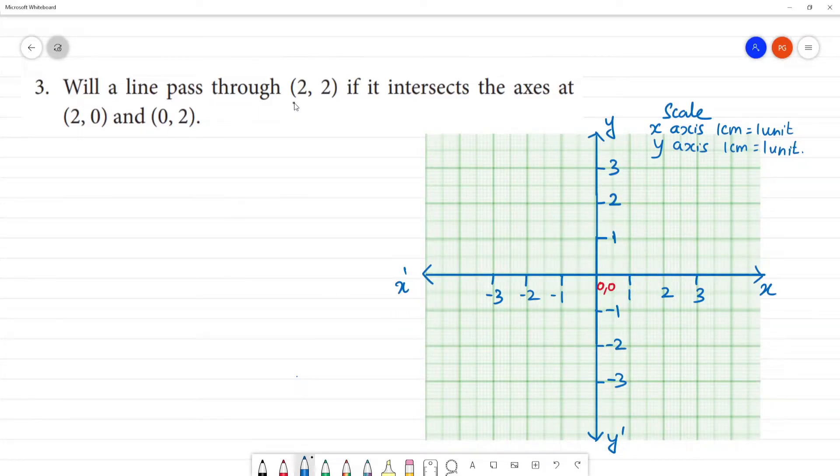Will a line pass through (2,2) if it intersects the axes at (2,0) and (0,2)? If we mark the points (2,0) and (0,2), what is (2,0)?